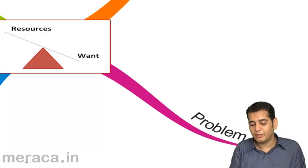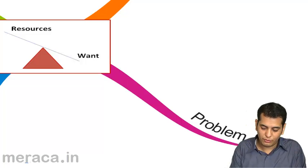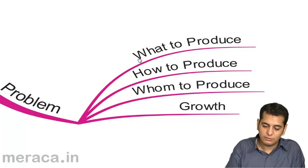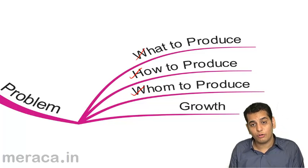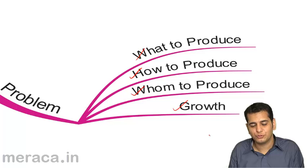And then we came to the problems of economy, the central problems of economy. The first problem is what to produce, the second problem is how to produce, third is for whom to produce, and finally, how do we provide for future growth.